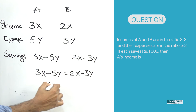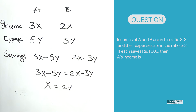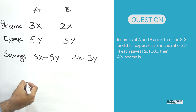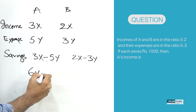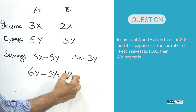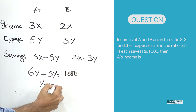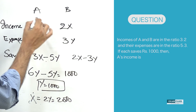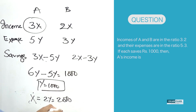Solving that equation gives x = 2y. We also know the savings amount is 1000 rupees, so substituting: 3x minus 5y = 1000, which gives 6y minus 5y = 1000, so y = 1000. Since x = 2y, x = 2000. The income of A is 3x = 3 × 2000 = 6000 rupees.